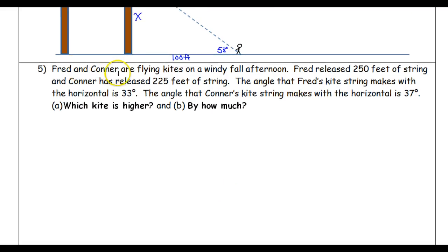Fred and Connor are flying kites on a windy fall afternoon. Fred released 250 feet of string and Connor has released 225 feet of string. The angle that Fred's kite string makes with the horizontal is 33 degrees. The angle that Connor's kite string makes with the horizontal is 37 degrees. Which kite is higher and by how much?